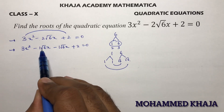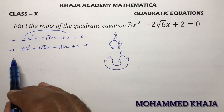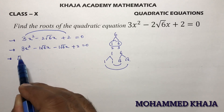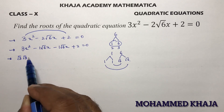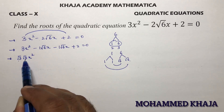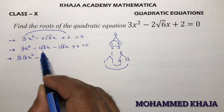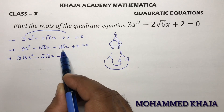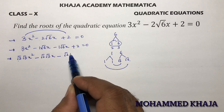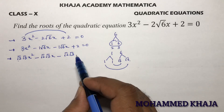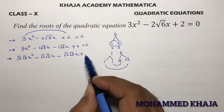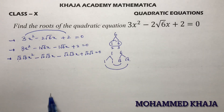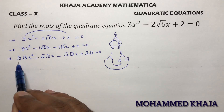Now you may find it tough to take the common factor. So rewrite 3 as √3 × √3, rewrite √6 as √2 × √3, and rewrite 2 as √2 × √2, so the expression equals 0.